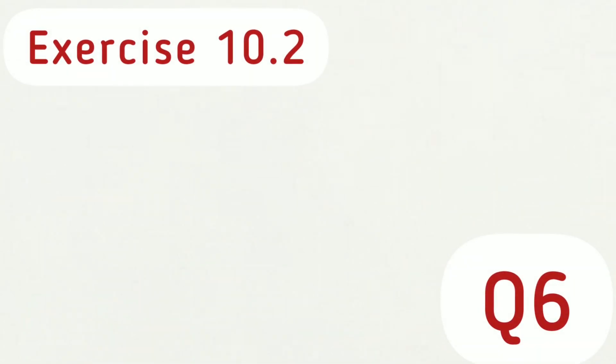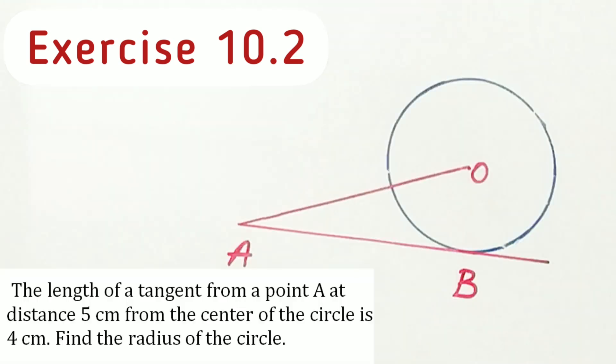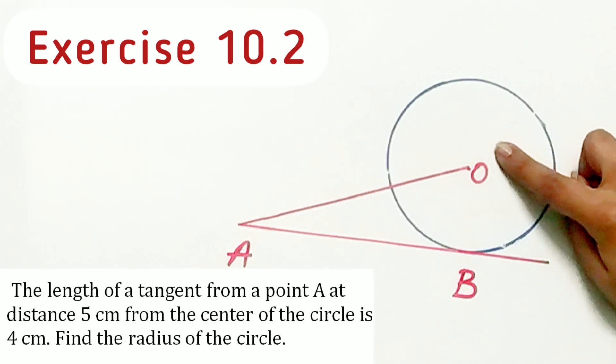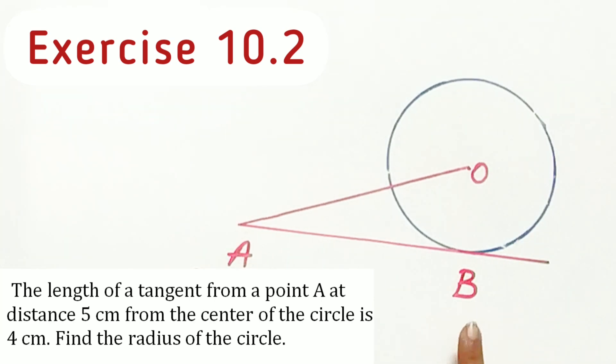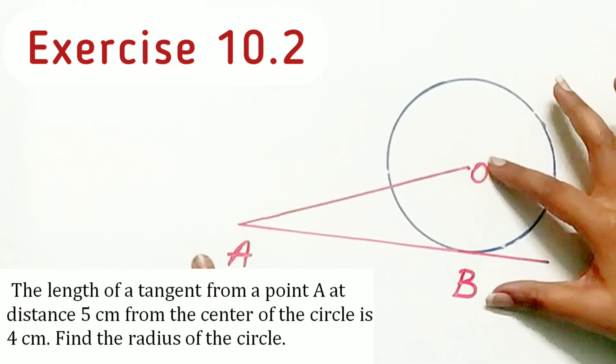Question 6 of exercise 10.2 says the length of a tangent from a point A at a distance 5 cm from the center of circle is 4 cm. We have to find radius of the circle.